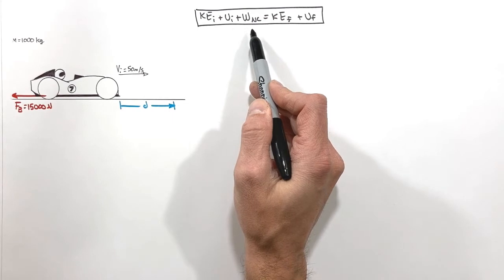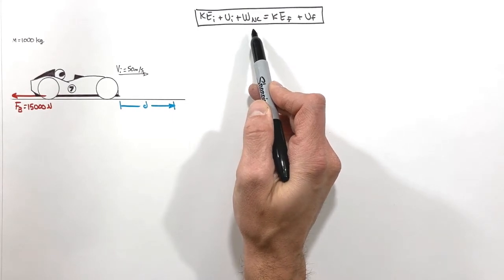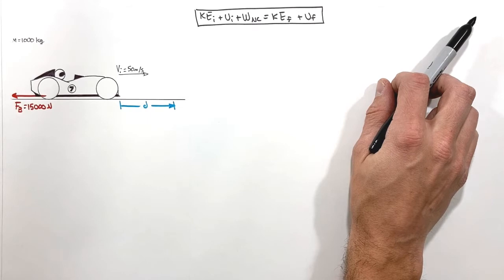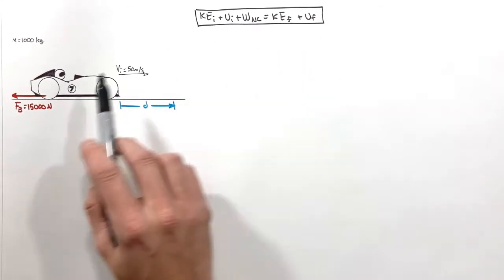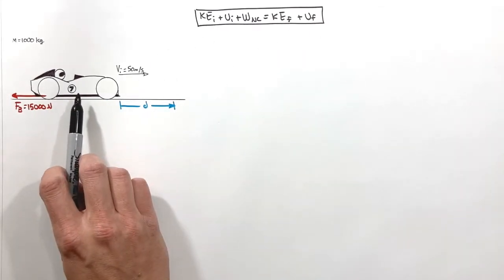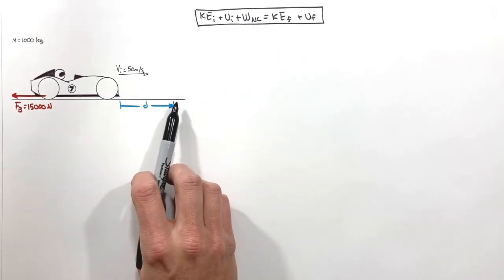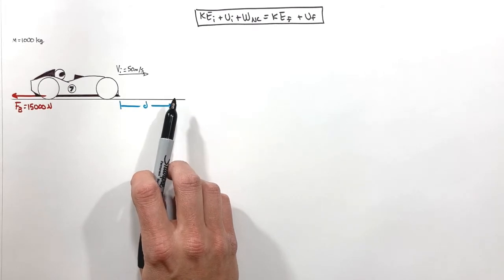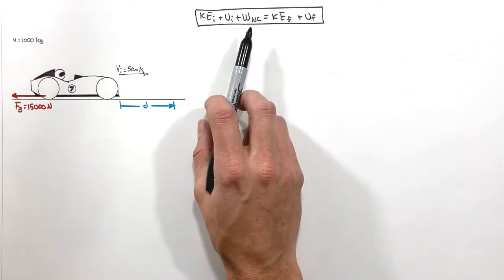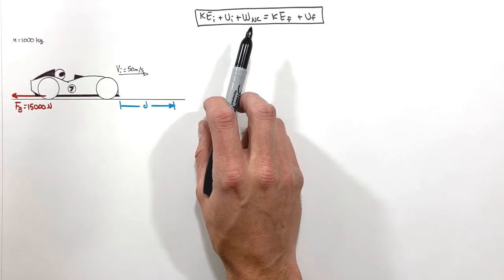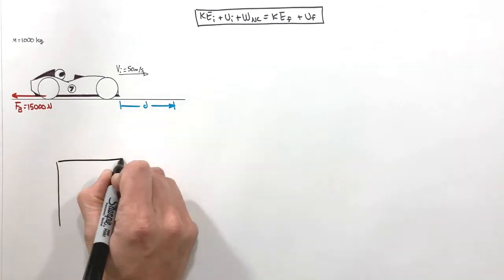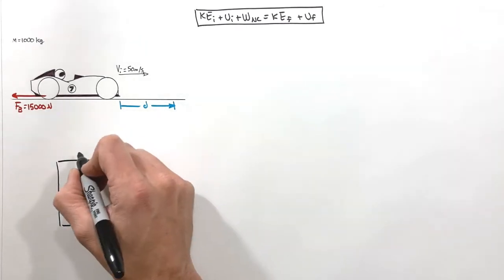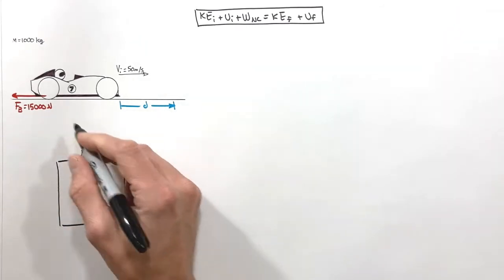This is the work-energy theorem. If you haven't seen this before, take a look at the video on the work-energy theorem — how it's derived and what the different variables mean. We're going to apply it to this car to figure out exactly how far forward it travels before coming to a stop. I want to use it graphically, so down here we're going to draw a box representing the mechanical energy of the race car.